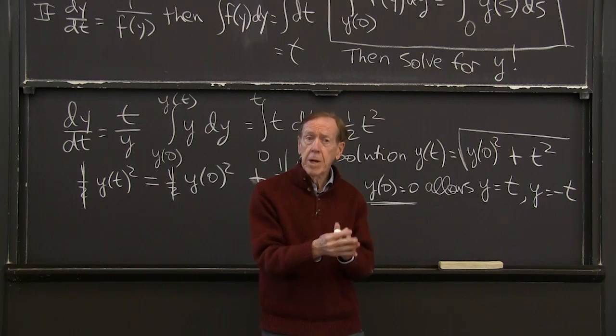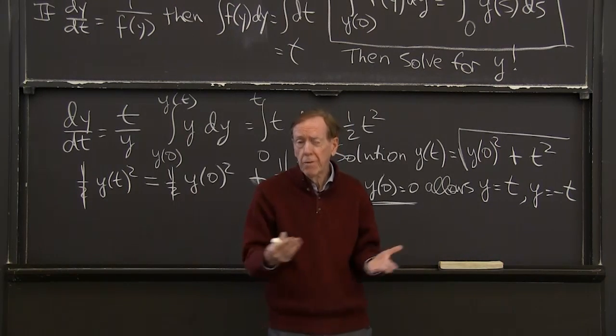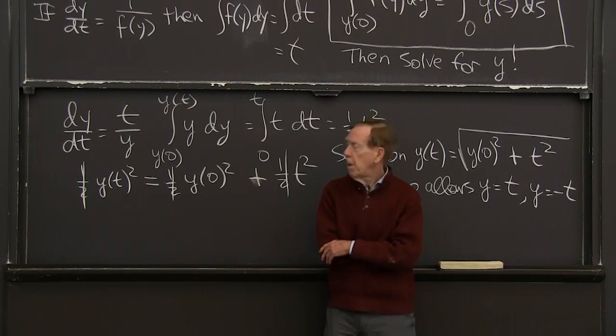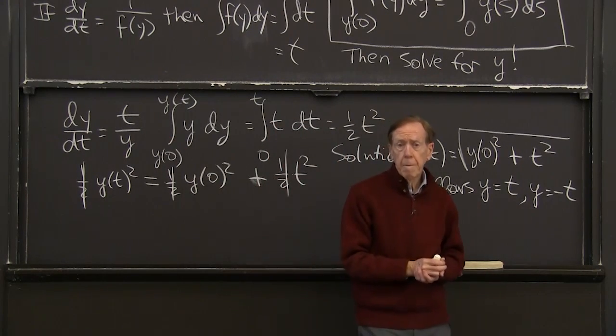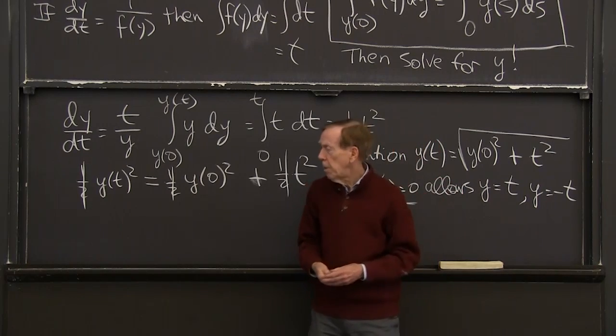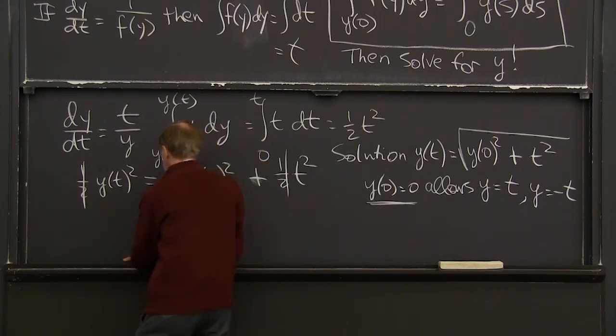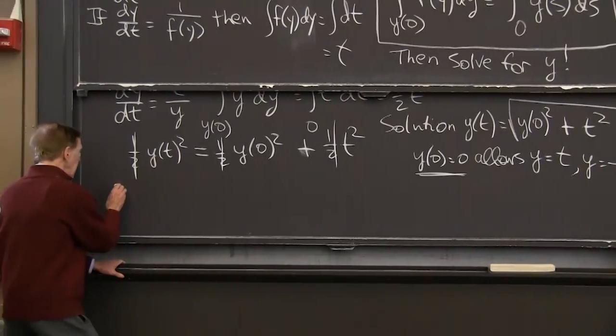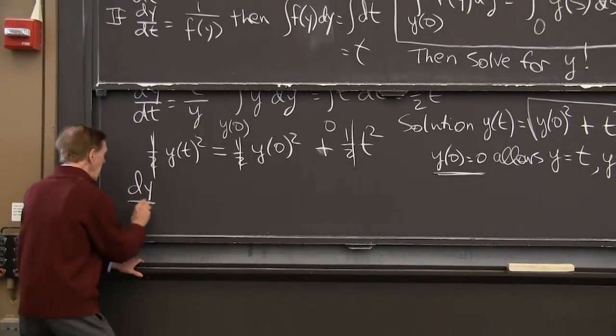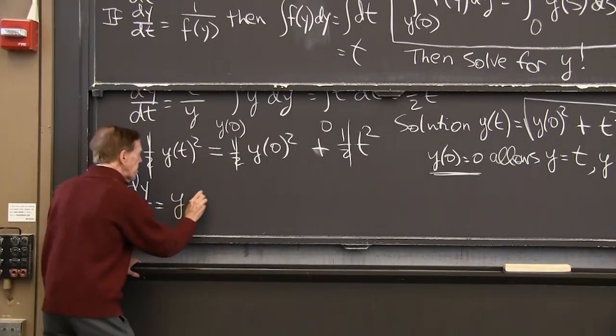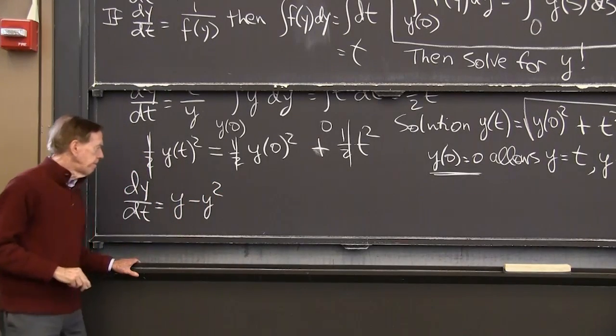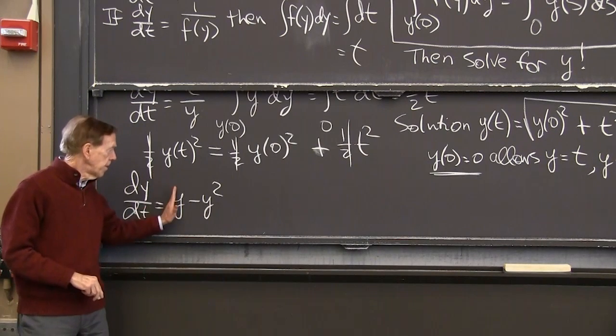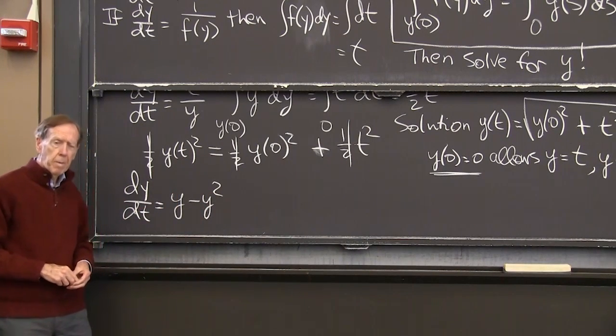And we'll have to think, when can we guarantee there's just one solution, which is, of course, what we want? OK. I better do another example going beyond this. And maybe the logistic equation is a good one. So that's separable. And it's going to be a little harder. So let me do that one. dy/dt is y minus y squared, let's say. The logistic equation. Linear term minus a quadratic term.